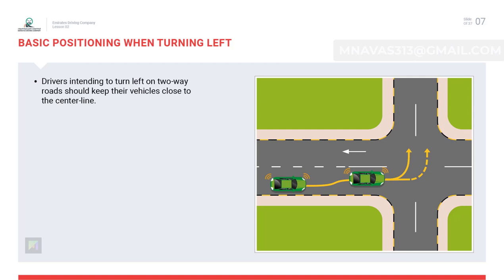Basic positioning when turning left: while turning left at any two-way junction, the driver should move the vehicle towards the centerline. The turning rule is applicable, which means you have to stop and give way to oncoming vehicles. The following drivers continuing straight will then have sufficient space for passing from the right, and your position will also clearly indicate your intention to turn left.